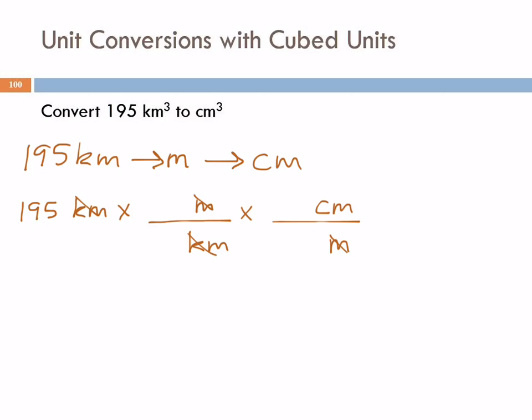So kilo means 10 to the third. And centi means 10 to the minus 2. Think of those prefixes as nicknames for those numbers. So here I have meter over kilometer. This is the abbreviation. On the other side of the line, I want to put the numerical meaning of that, 10 to the 3.